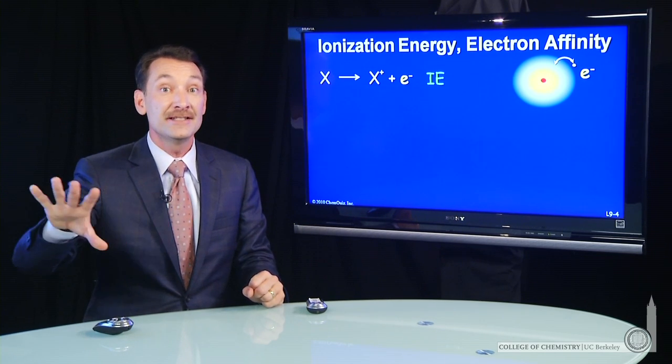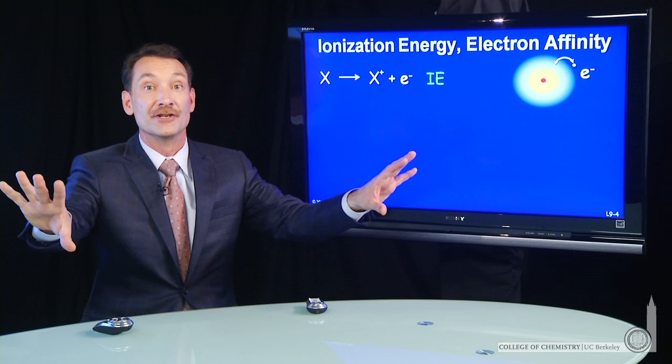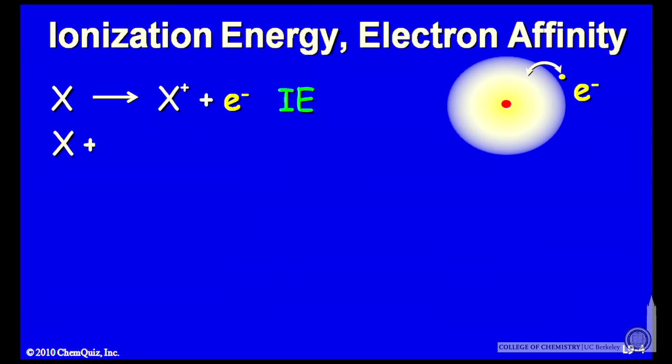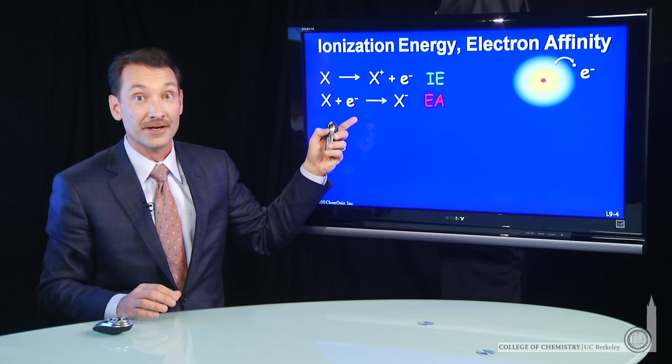And if energy is released, we're going to call those negative energies. So here is an electron affinity reaction. Electron affinity is adding an electron to a species.